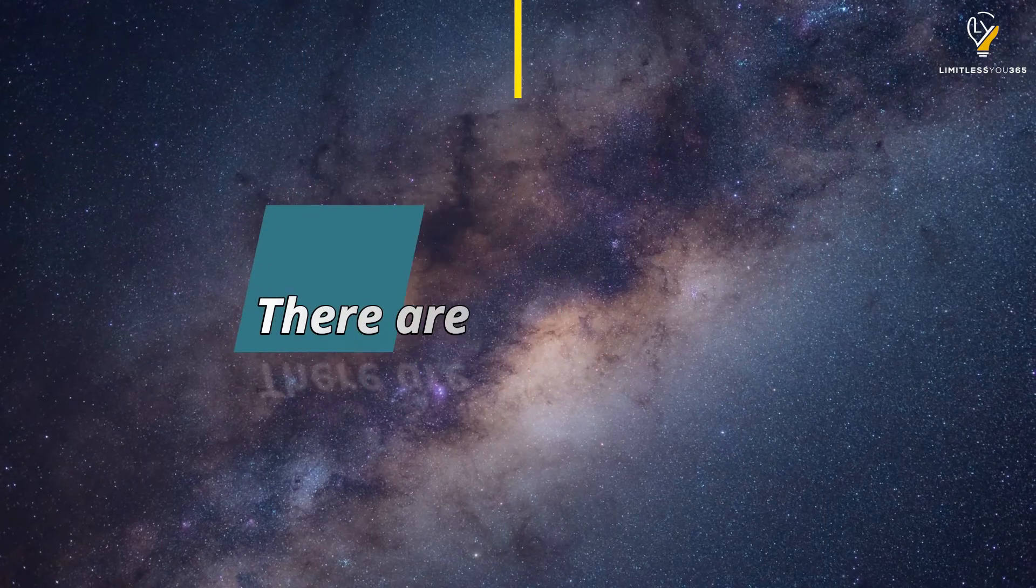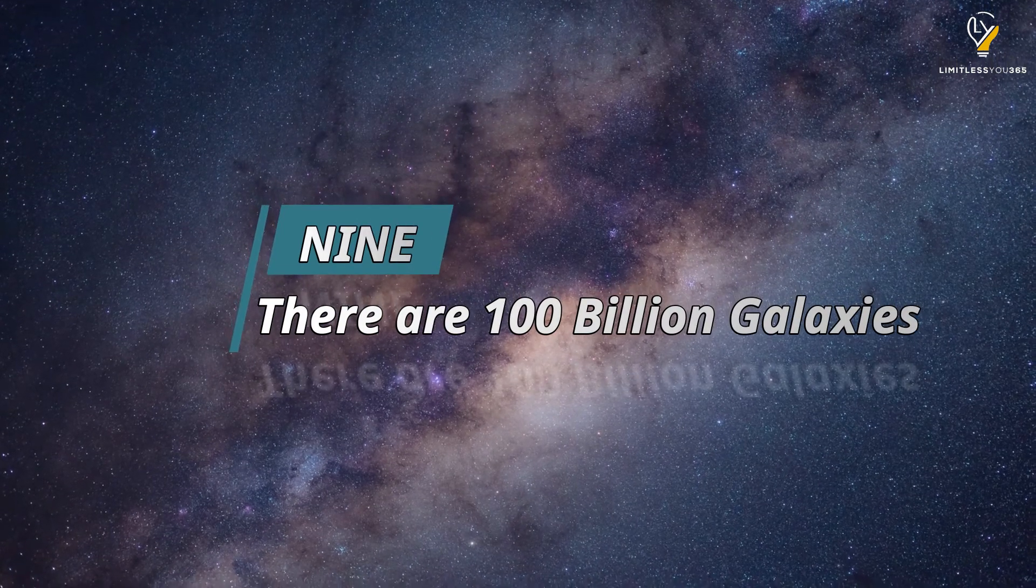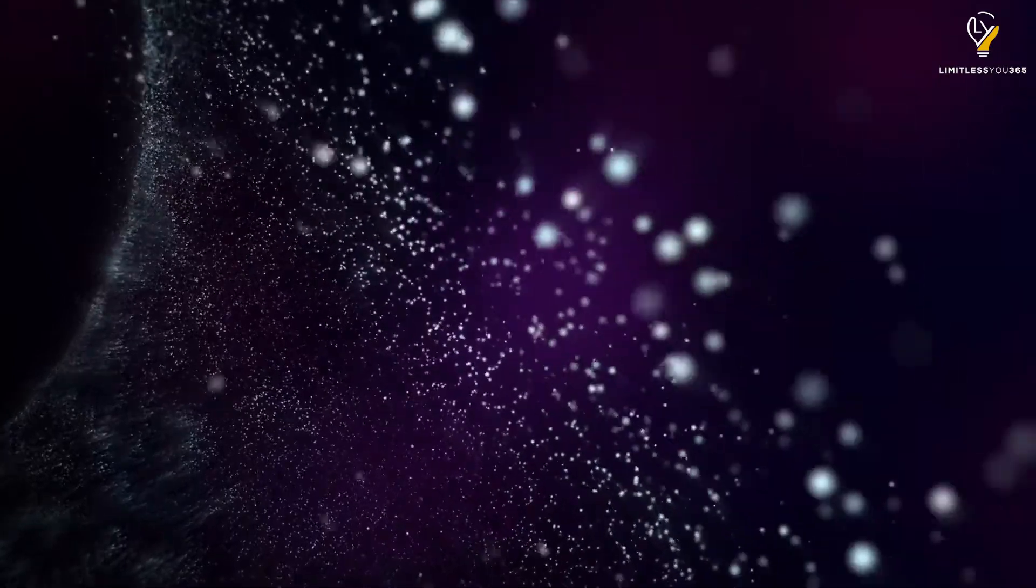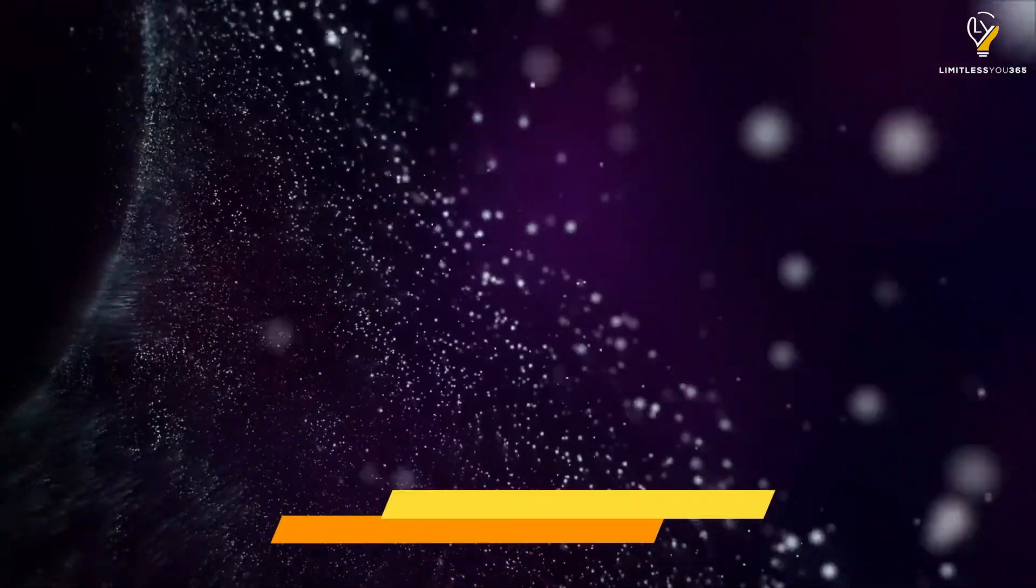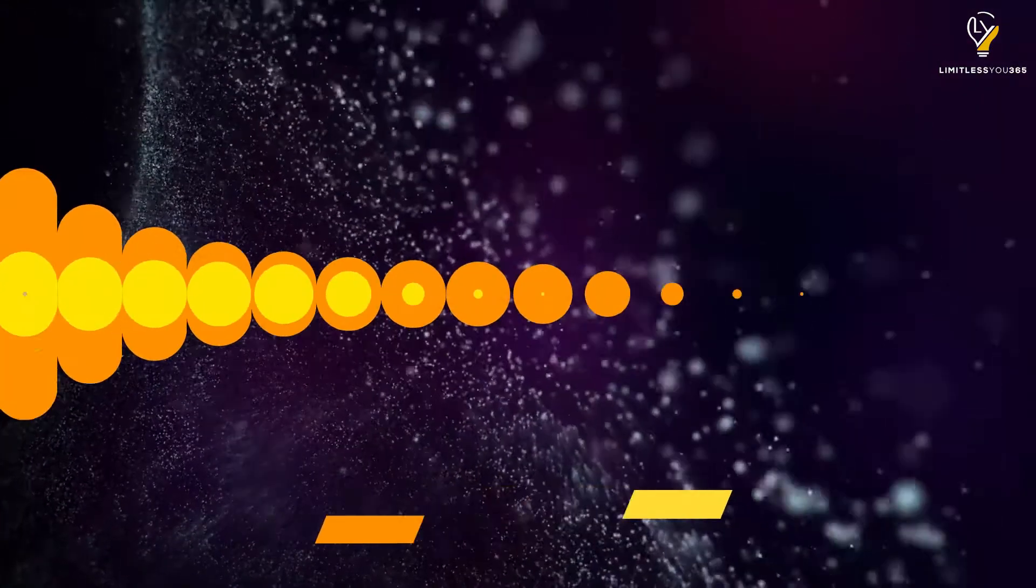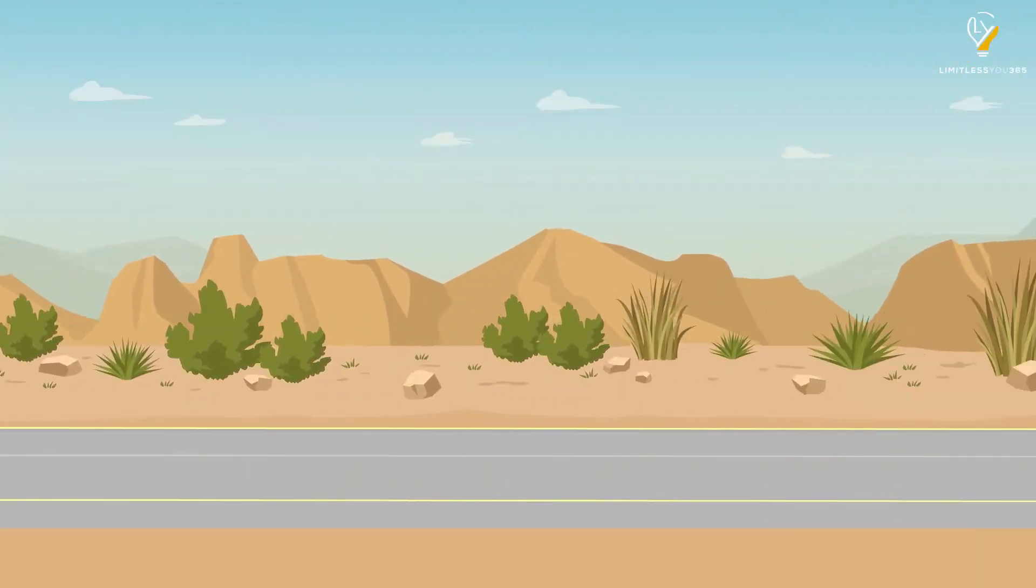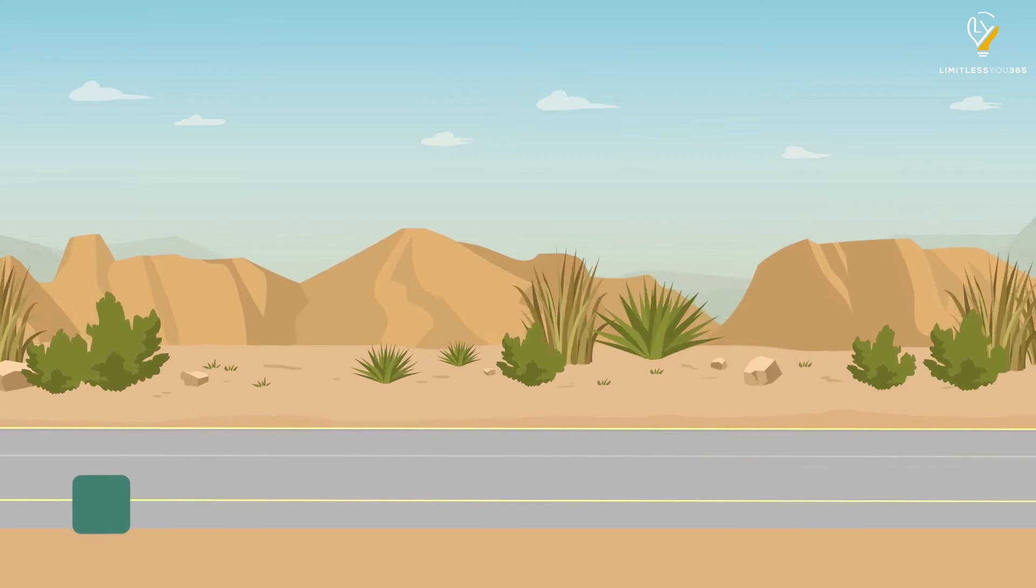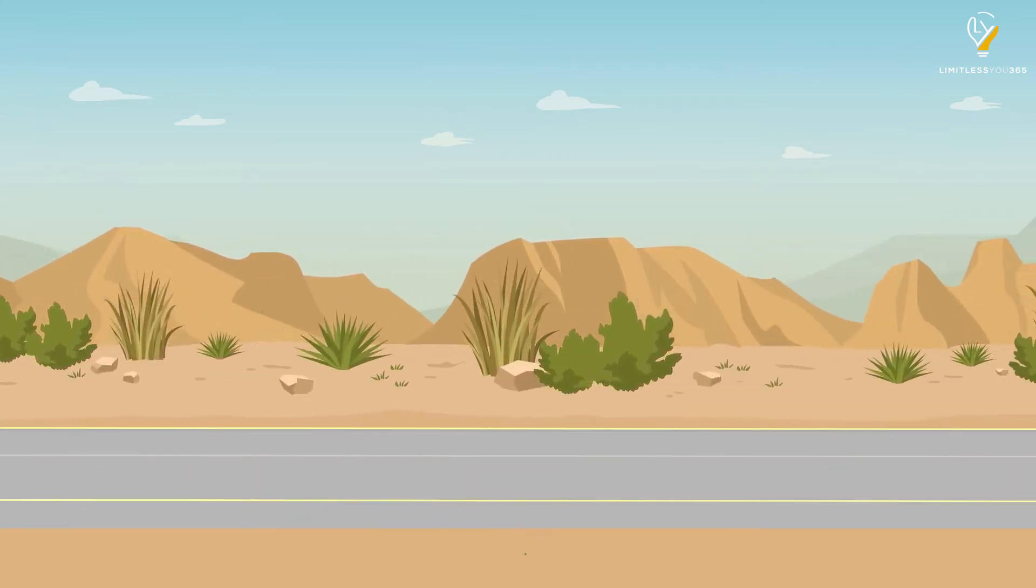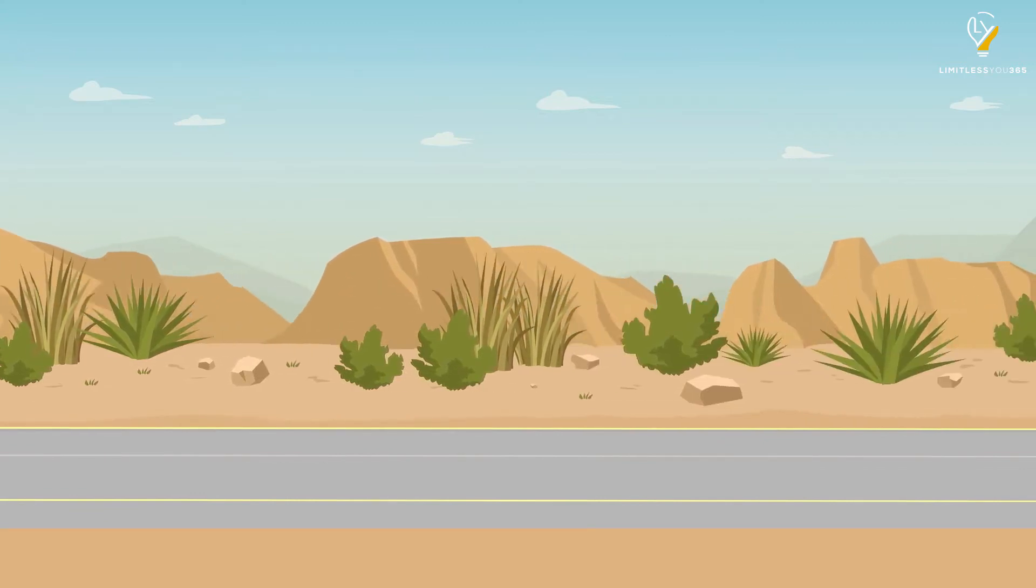Number nine: There are 100 billion galaxies. We may know very little about outer space, but what we do know is pretty mind-blowing. For example, scientists have found evidence of at least 100 billion galaxies out there. That's way more than all the grains of sand on Earth too, by about 10 sextillions to 1. 10 with 21 zeros after it.